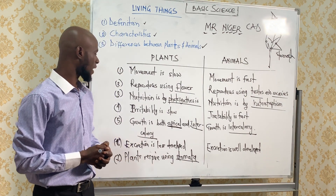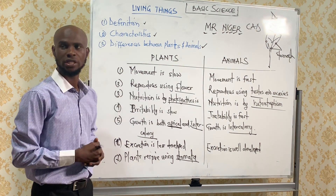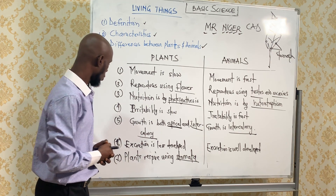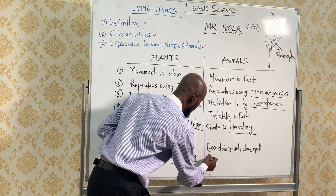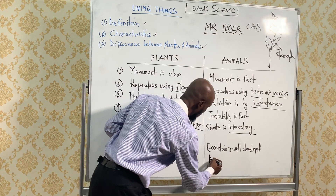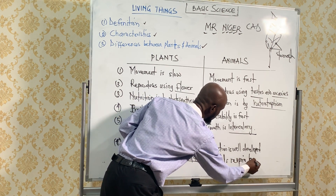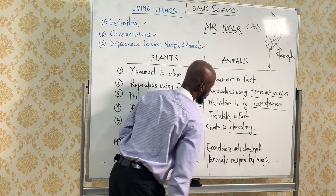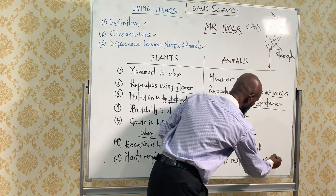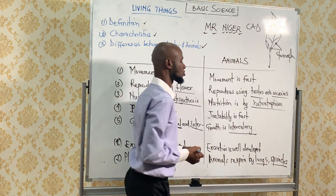How do animals respire? Animals also respire with a lot of structures. The major structure — for example, in a human being — is the lungs. Animals use the lungs to respire. Insects, on the other hand, respire with spiracles. So there are a lot of structures used to respire.